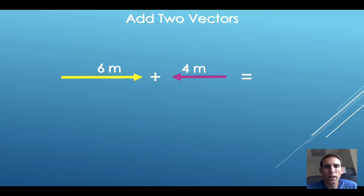Let's say we're adding together a 6-meter vector to the right and a 4-meter vector to the left. Our resultant is going to be a 2-meter vector to the right.